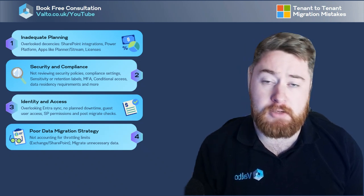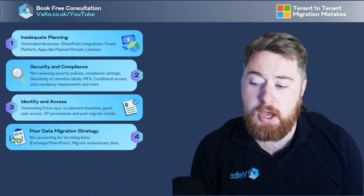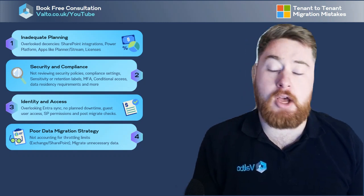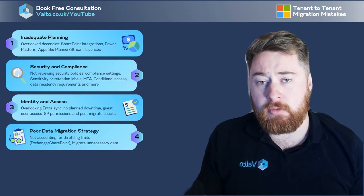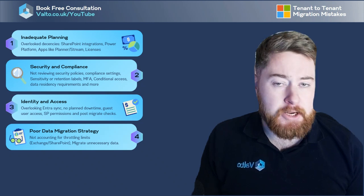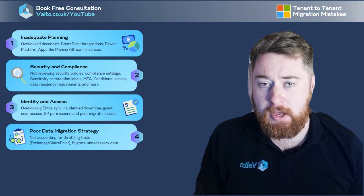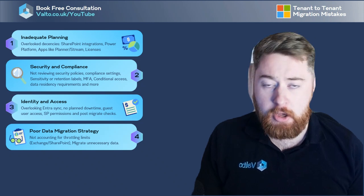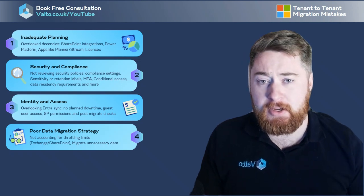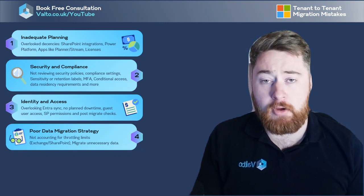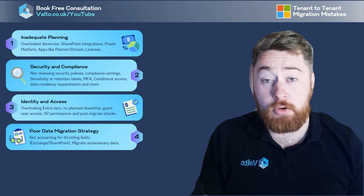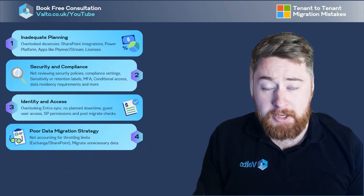The fourth most common failure for tenant-to-tenant migrations relates to poor data migration strategy. A key issue is not accounting for throttling limits. During the test migration phase you might not hit throttling issues that you would on a much larger migration. We tend to advise that migrations are batched — put together in specific sizes — so that you know what types of potential slowdowns and throttling thresholds you could hit. This applies to Exchange emails as well as SharePoint documents.